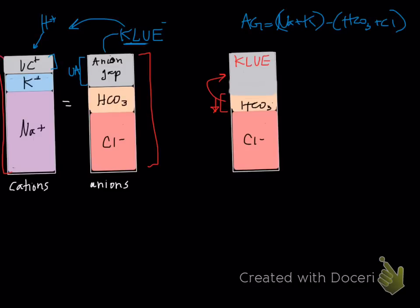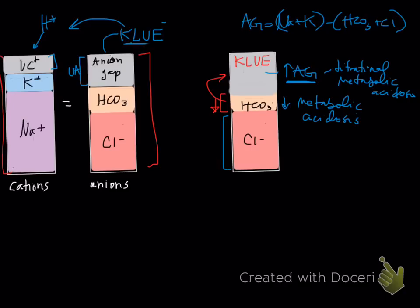Why bicarbonate decreases is because it's being used to titrate away these acids. When our anion gap is increased, we automatically call that a titrational metabolic acidosis. We already learned that when our bicarbonate is decreased, we call that a metabolic acidosis. But you need more information to know what kind of metabolic acidosis it is. One of those little features is the increase in anion gap, and in this you can see that the chloride actually remains the same.